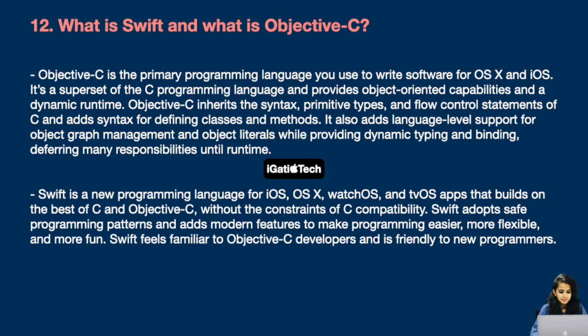Next question: what is Swift and what is Objective-C? First, Objective-C — Objective-C is the primary programming language used to write software for OS X and iOS. It is a superset of the C programming language and provides object-oriented capabilities and a dynamic runtime. Objective-C inherits the syntax, primitive types, and flow control statements of C, and adds syntax for defining classes and methods. It also adds language-level support for object graph management and object literals, while providing dynamic typing and binding, deferring many responsibilities until runtime.